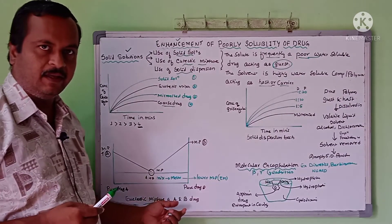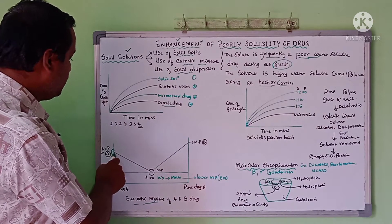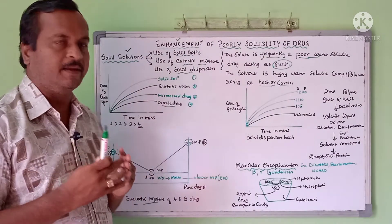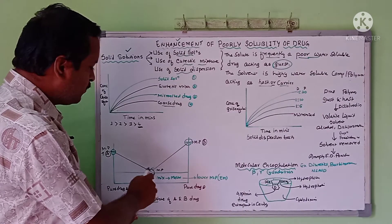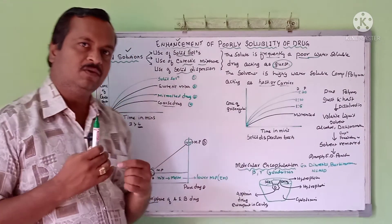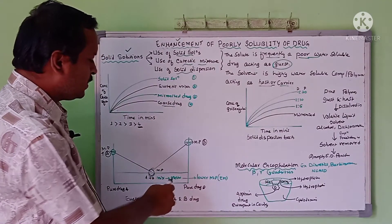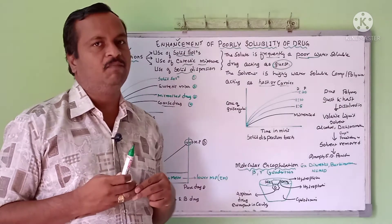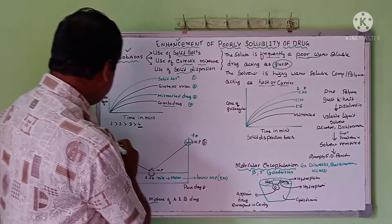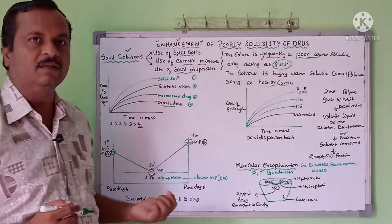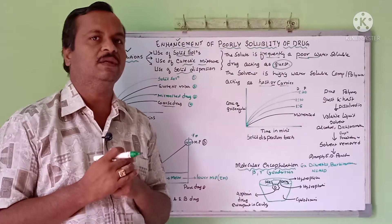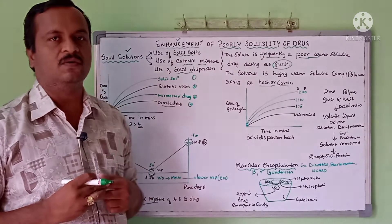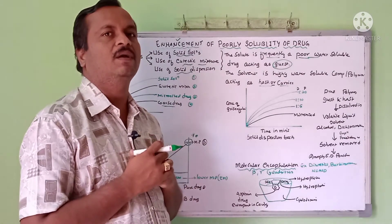This is the graphical presentation of a eutectic mixture. When pure drug A and pure drug B each have different melting points — say drug A at 90 degrees and drug B at 70 degrees — when they are mixed together, lowering of the melting point takes place. The AB mixture melts at a lower melting point, say 50 degrees, compared to either pure drug A or pure drug B individually. Such a reduction in melting point upon mixing is called a eutectic mixture, and with this the solubility of the particular component can be increased.